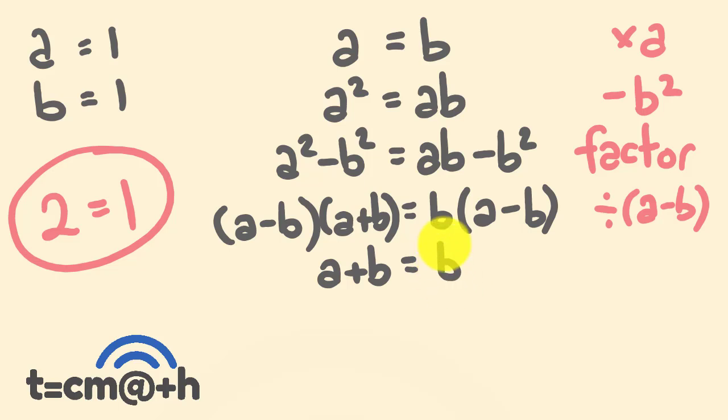Alright, so what do we know? We know that A is equal to B. So if A is equal to B, I could say A here is B. Okay, they're the same thing. A is equal to B, so I'm going to substitute B for A. So B plus B is equal to B.